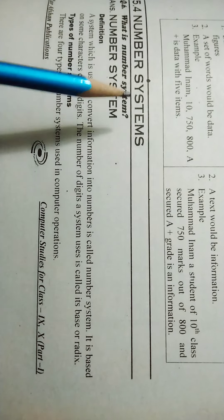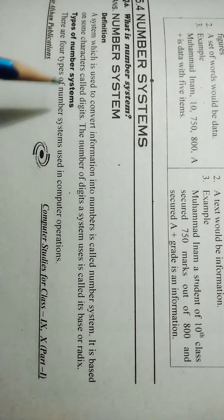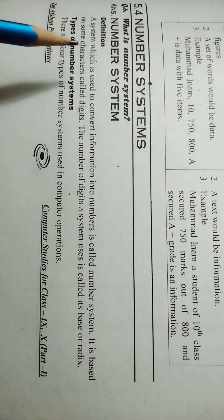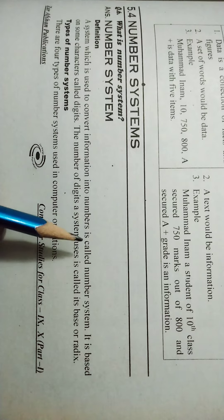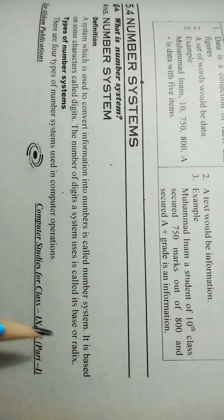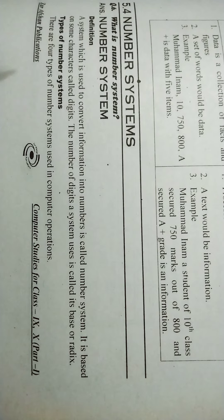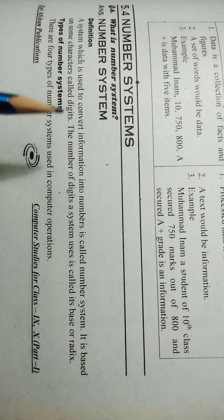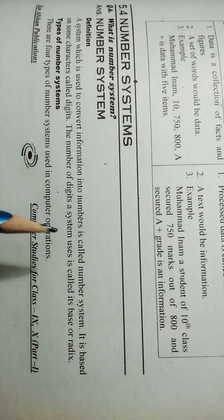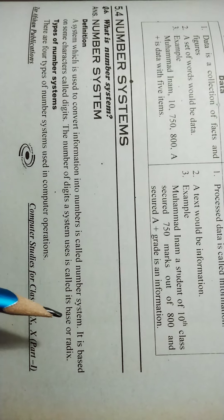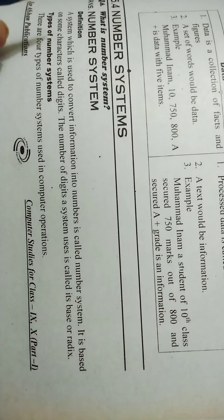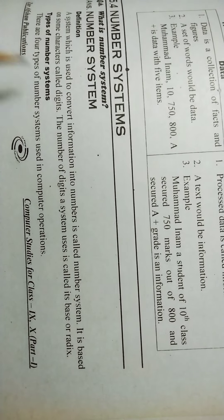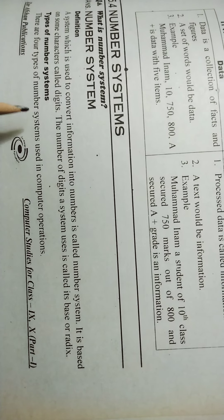Today our topic is number systems. A system which is used to convert information into numbers is called number system. It is based on some characters called digits. The number of digits a system uses is called its base or radix.